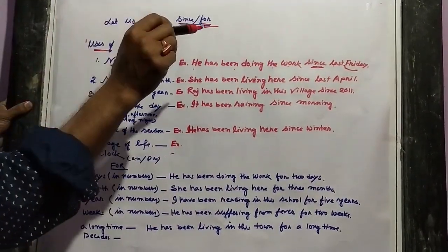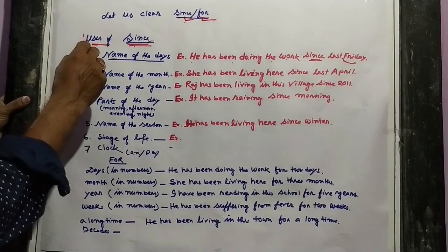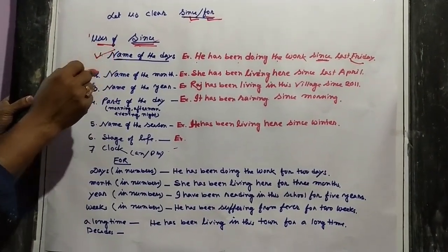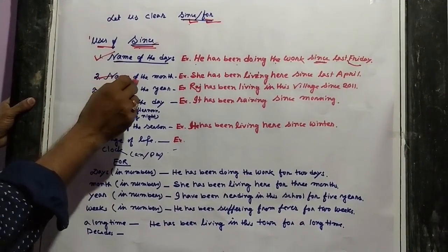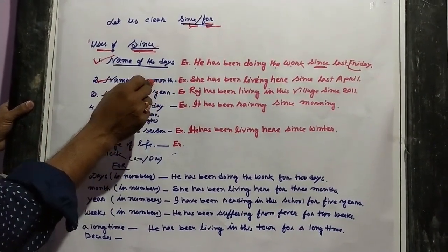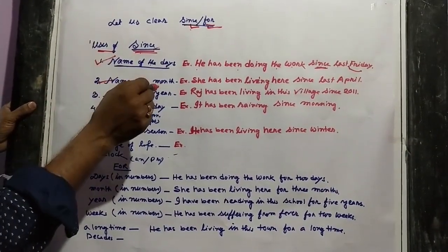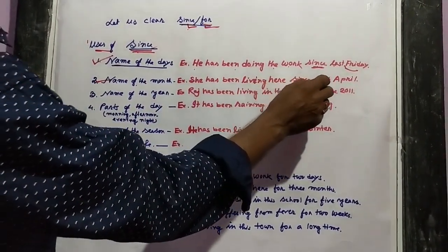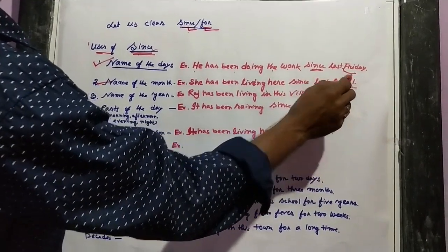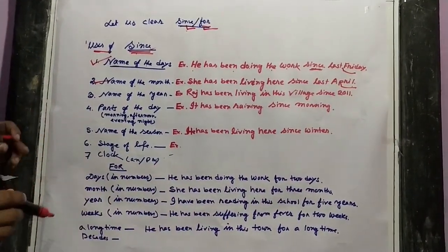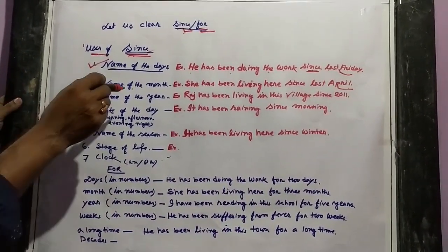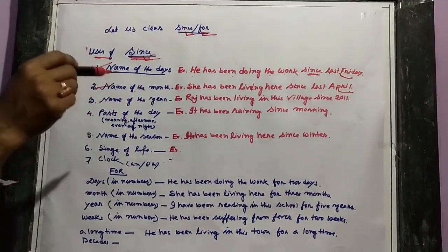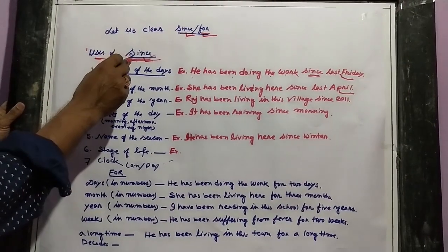Second, we use 'since' with the name of the month. For example: 'She has been living here since last April.' Here 'April' is the name of the month, so you have to use 'since'.